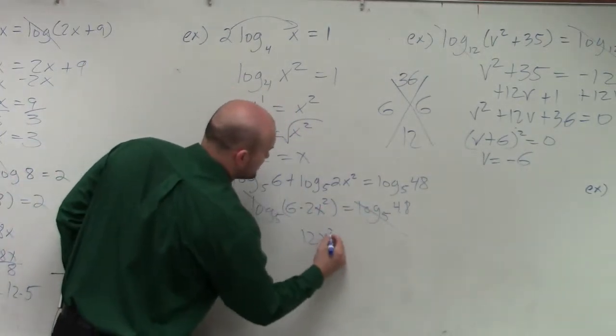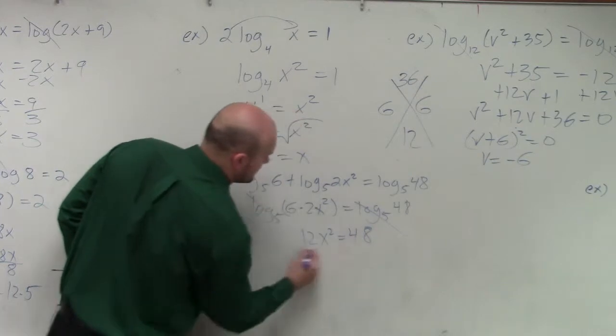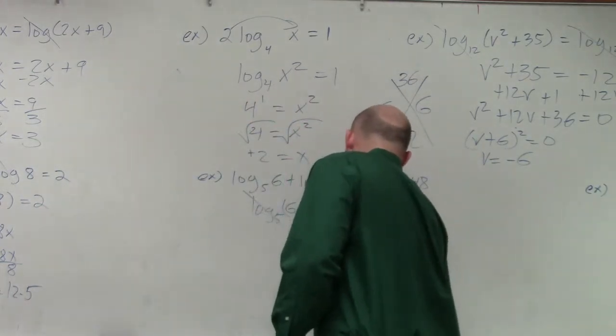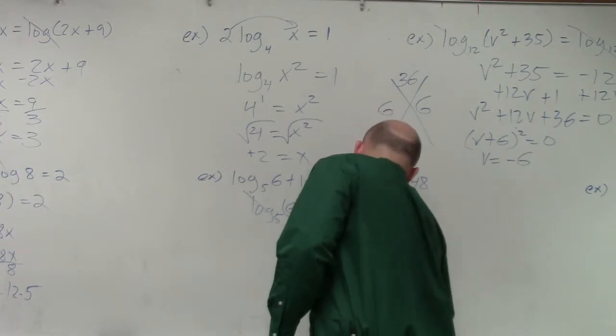So I have 12x squared equals 48. Divide by 12, divide by 12. x squared equals 4. Square root, square root. x equals plus or minus 2.